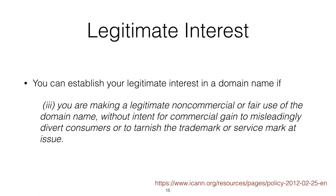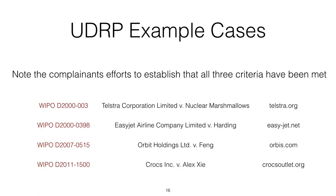There are reference numbers for some UDRP cases that have been heard at the WIPO, and we can see in all of these that the complainants' efforts to establish all three criteria have been met. EasyJet for example was able to establish that the domain name was confusingly similar to its trademark, that Harding had no legitimate interest in using that name, and that the domain name had been registered or was being used in bad faith. These cases are all available to the public and are very well indexed on the WIPO website.